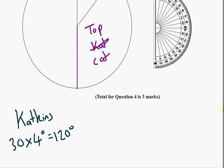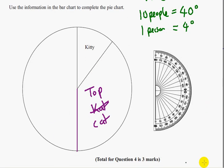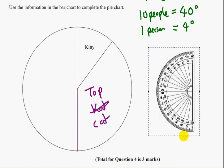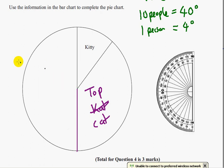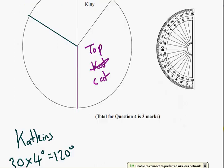So we need to get our protractor and turn it around. And we need to mark on 120 degrees. So get your pen, mark on 0 through to 120 degrees. So make a mark. And get your ruler and draw a line across. So this is 120 degrees of the circle, and that represents catkins. So I'm going to write catkins in here.